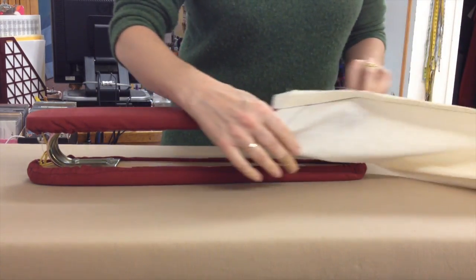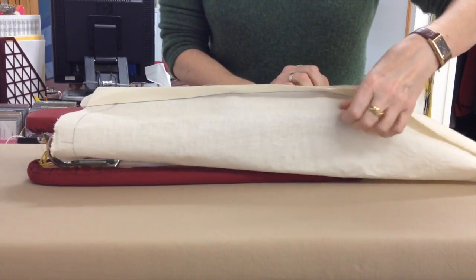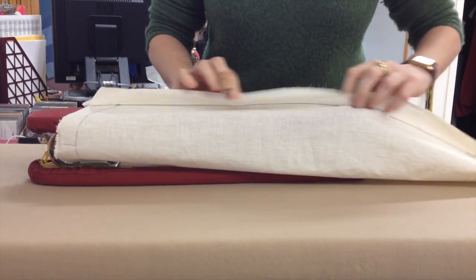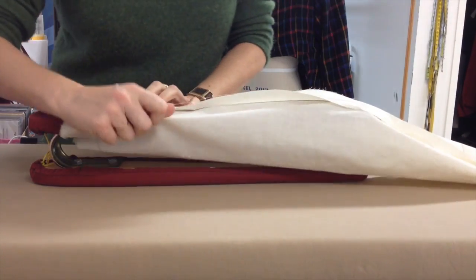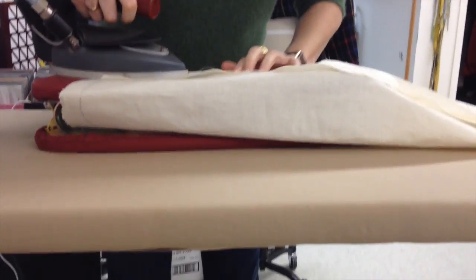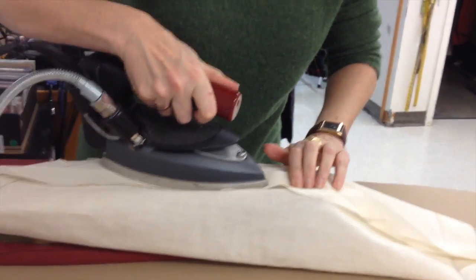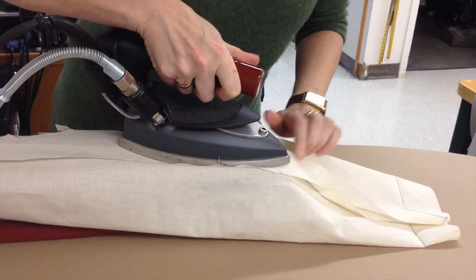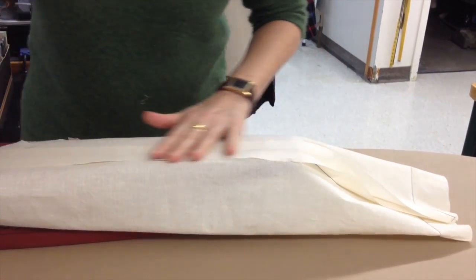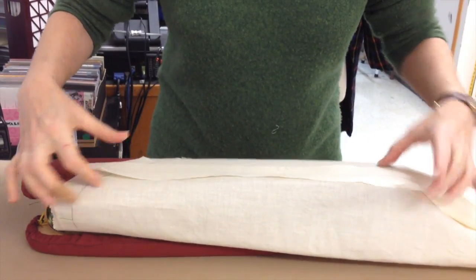This is a sleeve mock-up. Mock-up meaning it's cut out of muslin. We're going to test the pattern, and this is how you isolate just the part of the sleeve that you want to iron. I'm wanting to iron this seam open.